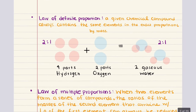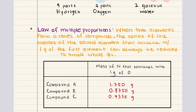Building on these principles, Joseph Proust, another French chemist, established the law of definite proportions by demonstrating that compounds always contain the same proportion of elements by mass. His findings influenced John Dalton, who proposed that atoms as indivisible particles make up elements. This atomic theory explained why compounds always have consistent relative masses of their constituent elements.